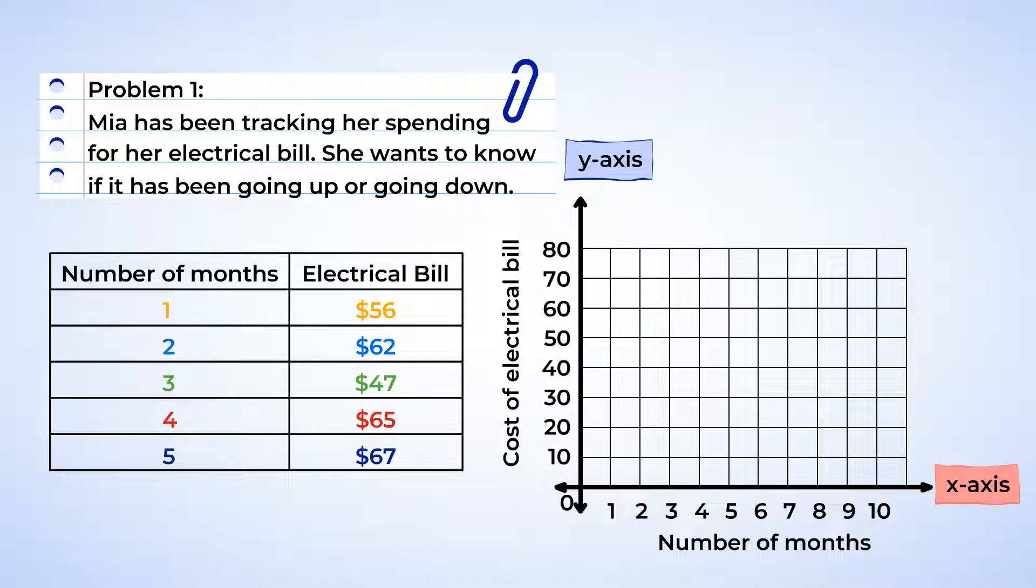That was quick. Now that our graph is created, we can plot our points. We're going to start with the first month and find one along the x-axis here. We can then follow this up to get to the cost of the electrical bill. $56.